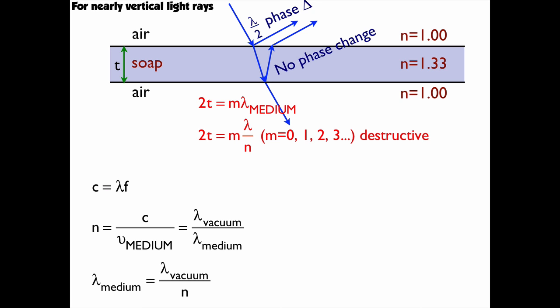So twice the thickness is equal to m lambda over n, and my orders are 0, 1, 2, 3, and that's destructive. So these are the frequencies that it's blocking out. And the frequencies that you see, constructive interference, would therefore be m plus a half.